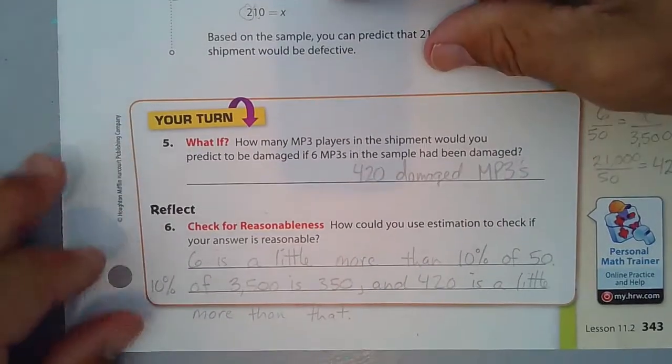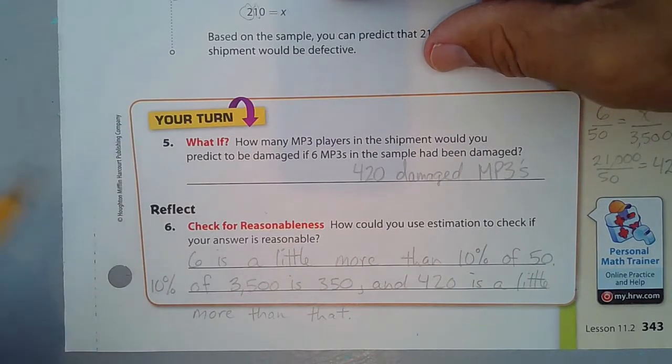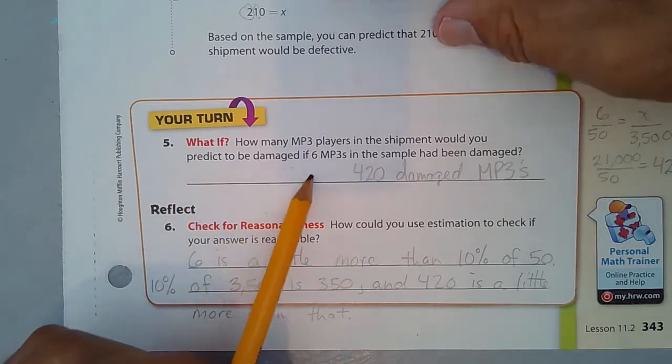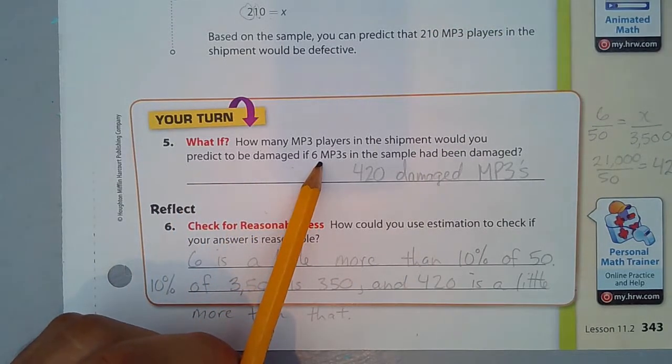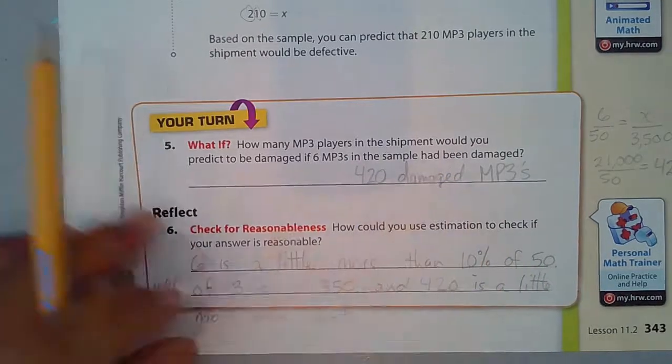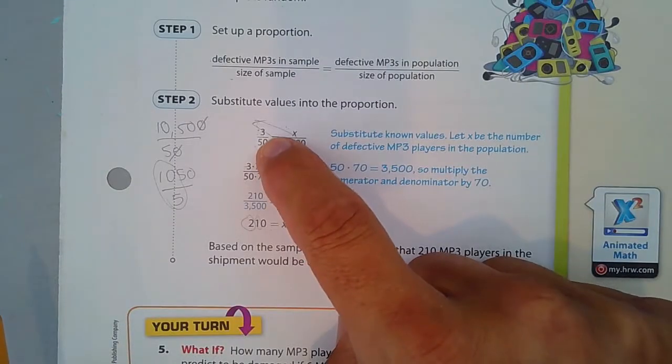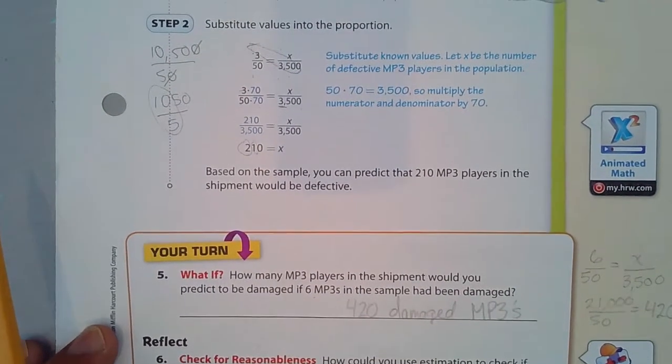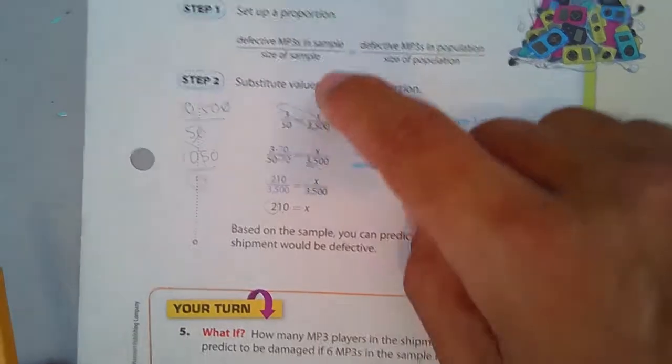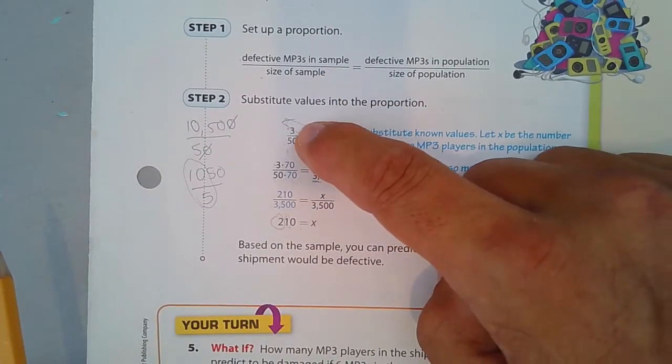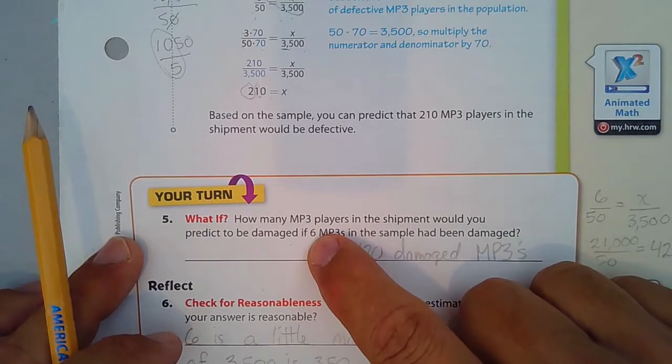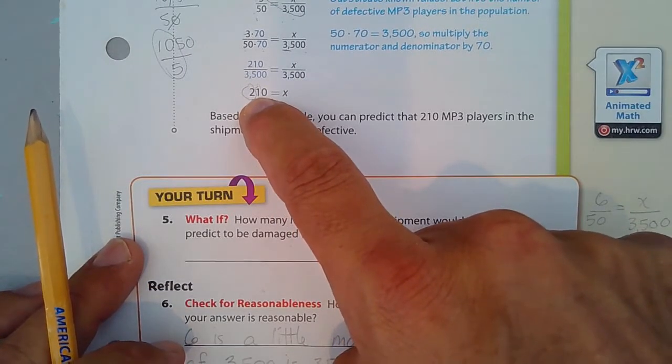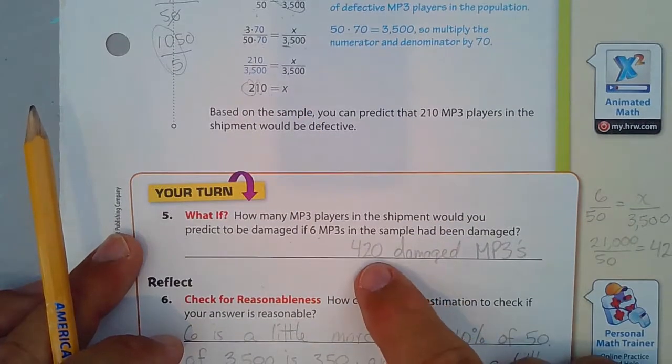So, it's your turn. What if? How many MP3 players in the shipment would you predict damaged if 6 MP3 players in the sample had been damaged? Well, before, there were 3 that were damaged. So, this time, there's 6. Now, one way to think about this is, if we doubled the number that are damaged from 3 to 6, then, for the entire population, we could just double that number. 2 times 210 is 420. And think about that. Double the 2 is 4. Double the 1 is 2. And double the 0 is 0.